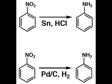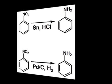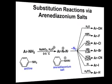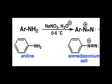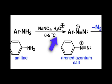Now that we have the aniline in hand, let's take a look at the synthetic utility this opens up for us. The aniline can be converted to the aryl diazonium salt by treatment with sodium nitrite and an acid source, keeping the reaction temperature between 0 and 5 degrees Celsius.